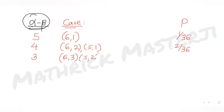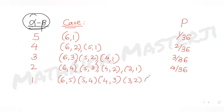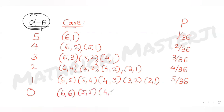For a difference of two: outcomes (6,4), (5,3), (4,2), (3,1) — probability 4/36. For difference of one: (6,5), (5,4), (4,3), (3,2), (2,1) — probability 5/36. For difference zero: (6,6), (5,5), (4,4), (3,3), (2,2), (1,1) — probability 6/36.